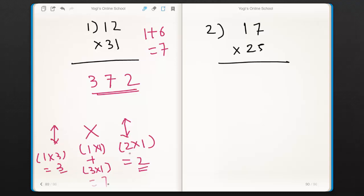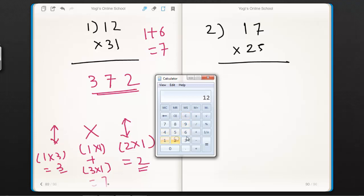Let's recheck our answer using calculator. Question was 12×31. Answer is 372. I hope you understand this method.